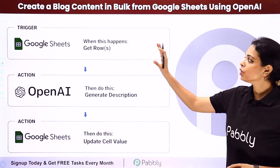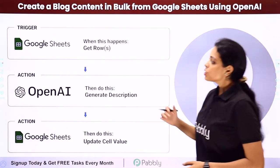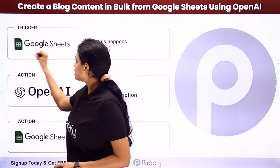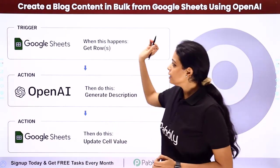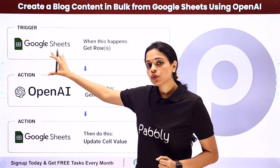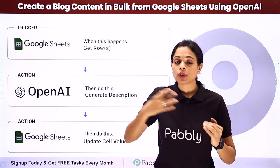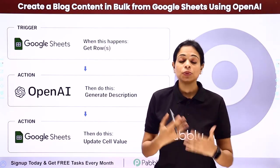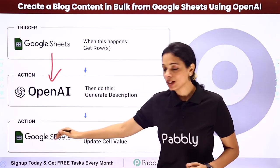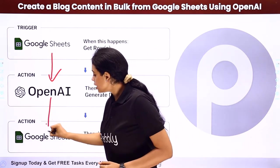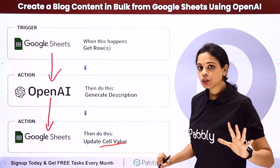In this video we are going to see how to create blog content in bulk from Google Sheets using OpenAI. So let's say that you are using Google Sheets as a spreadsheet where you have different topics, and you want blogs to be written for all these topics. When you have to write these topics and descriptions in bulk, you can do this.